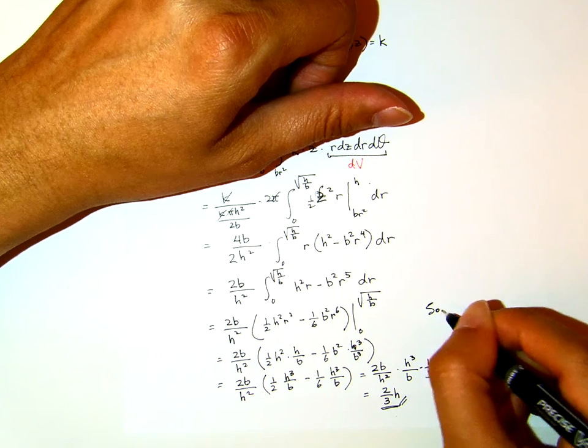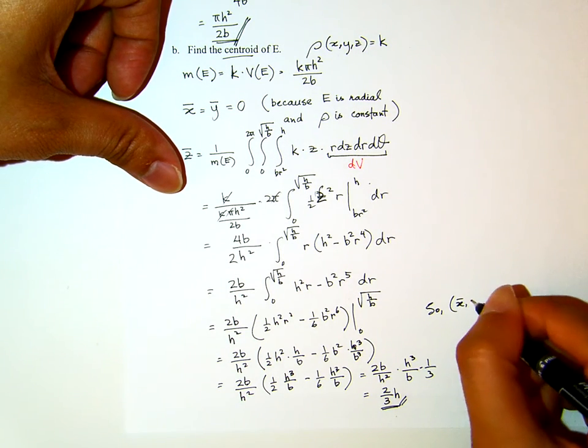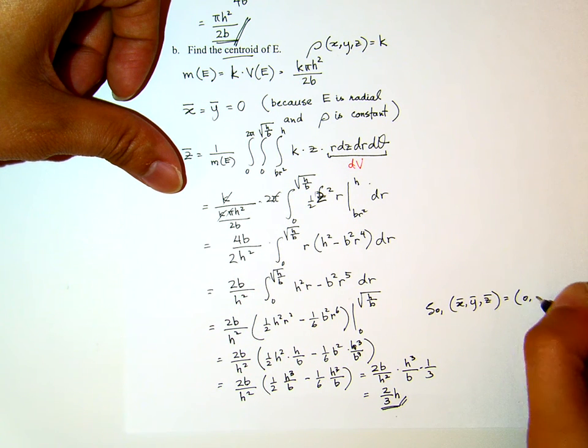In other words, let me put it here. So, the center of mass, the center of E is 0, 0, 2 over 3 H.